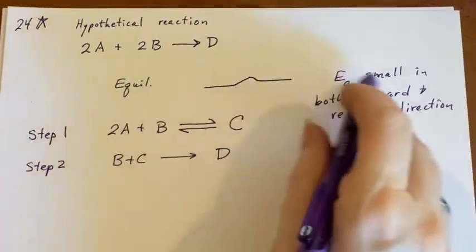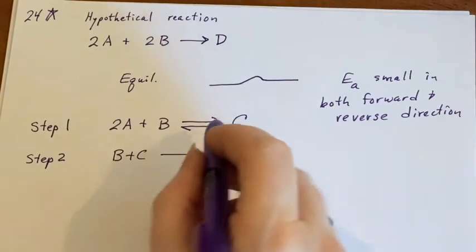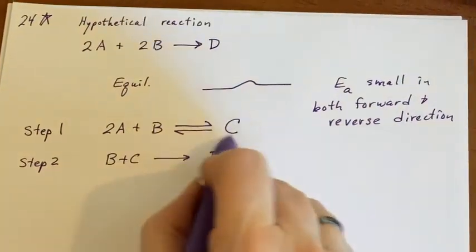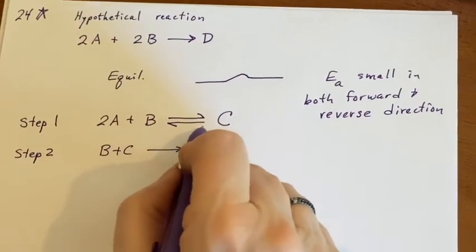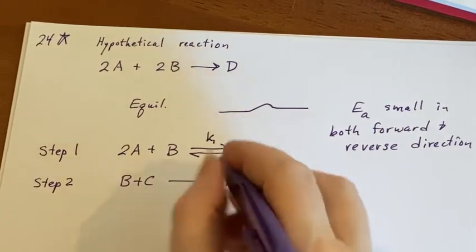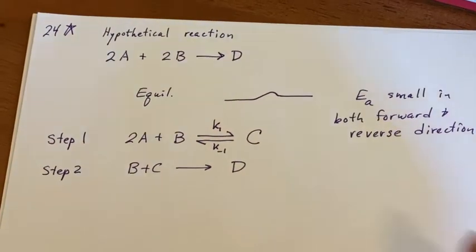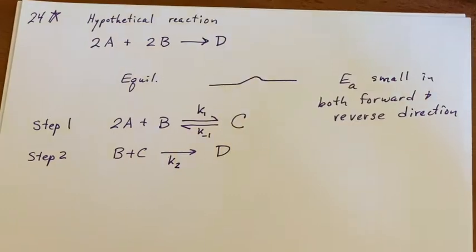If we're analyzing this in terms of rate, we need to come up with the K's. In step one, since we have this double-headed arrow, K₁ is the forward direction and K₋₁ is the reverse direction. Then this would be K₂ like normal.